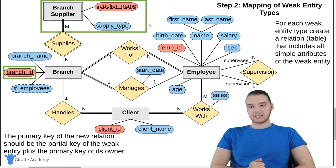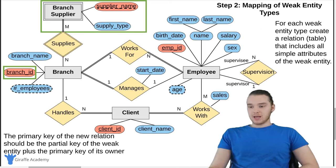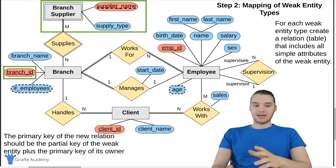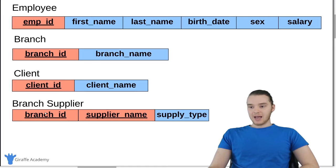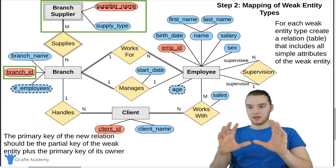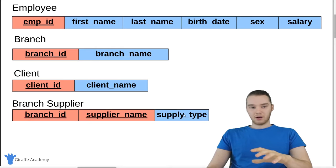Step two is the mapping of weak entity types. Over here, we have one weak entity type inside of this green square. For each weak entity type, we want to create a relation or table that includes all of the simple attributes of the weak entity. The primary key for the new relation should be the partial key of the weak entity plus the primary key of its owner. In this case, the primary key of the owner is branch ID, because branch is the entity participating in the identifying relationship with branch supplier. So we get this new table, branch supplier, with a primary key of branch ID and supplier name, and supply type. Both of those come together to make our composite key — it's a compound key. Now we have four tables: employee, branch, client, and branch supplier, all with their associated attributes.